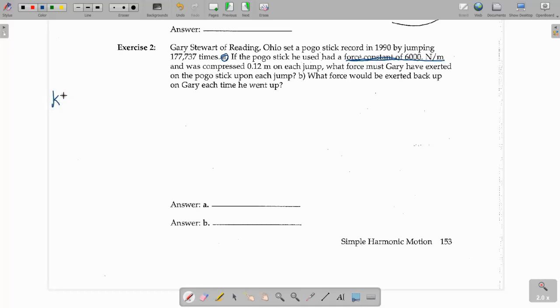Remember, when it says force constant, it's also the same thing as spring constant. So, 6,000 newtons per meter. And it was compressed 0.12 meters on each jump. So, that is referring to the distance that the spring was displaced from its equilibrium point, what we more commonly refer to as stretch, or in this case, compression of the spring. So, that's 0.12 meters.